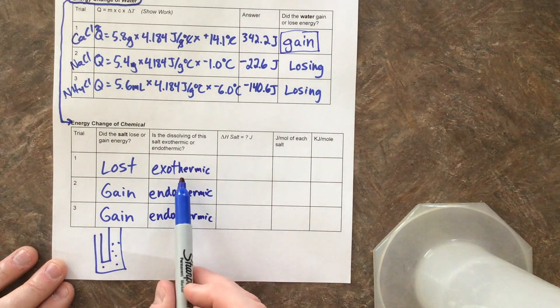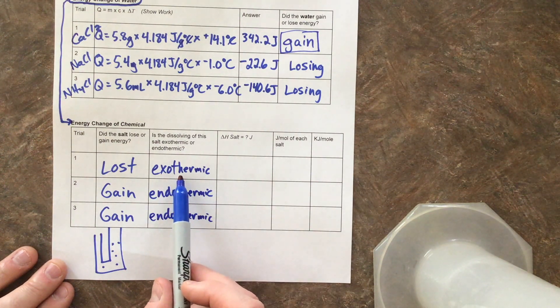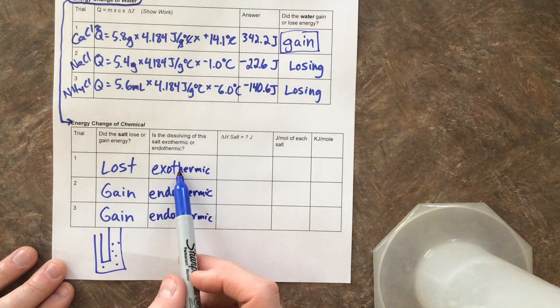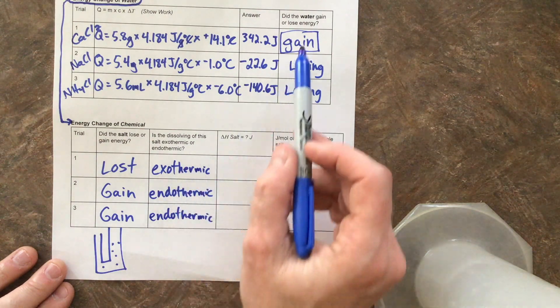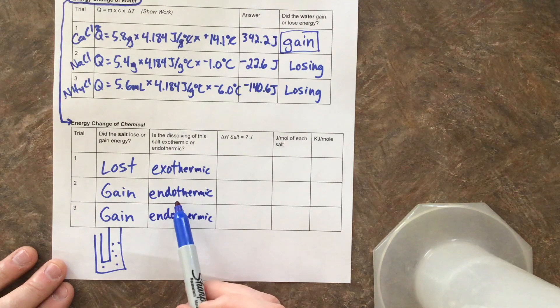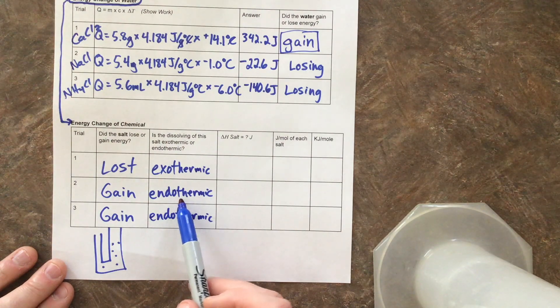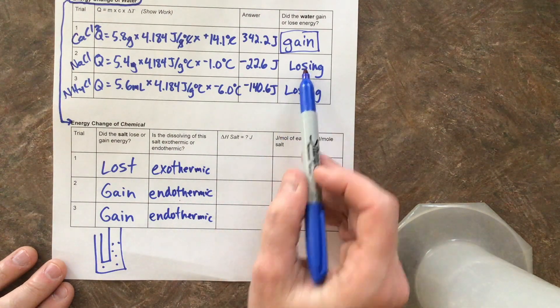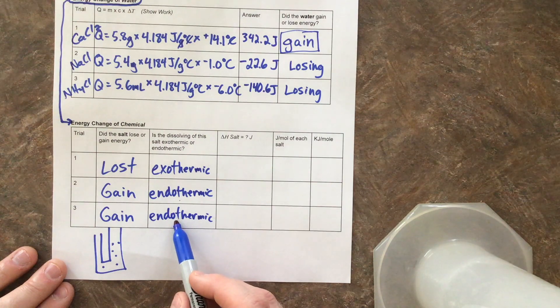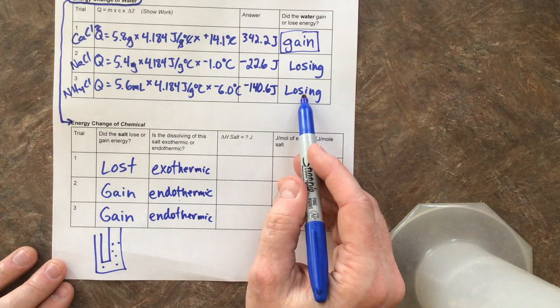So when we compare, when someone gains, someone loses. If the salt was exothermic, then you could have said that the water was endothermic. If the salt's endothermic, then the water was exo. And if the salt was endo, then this water was exo.